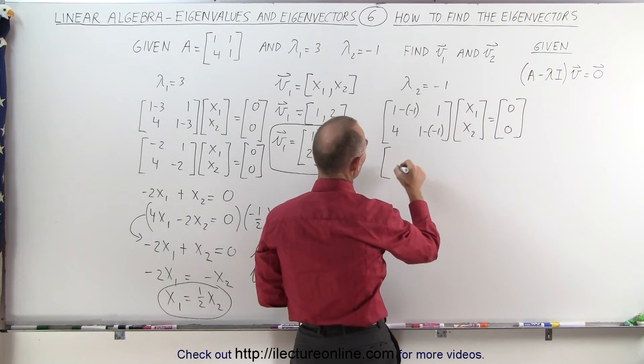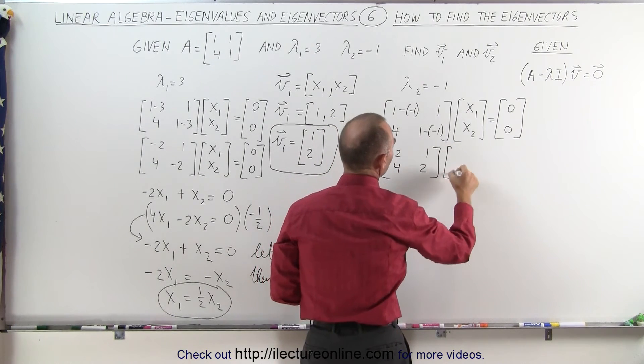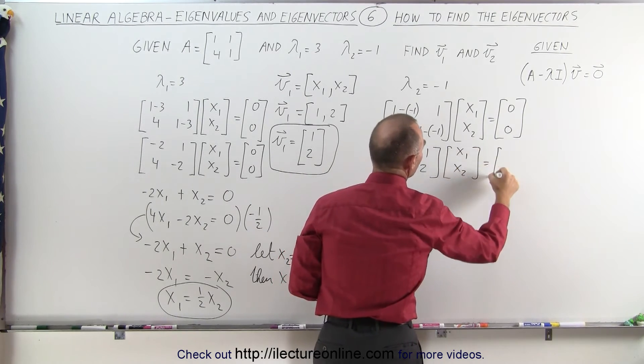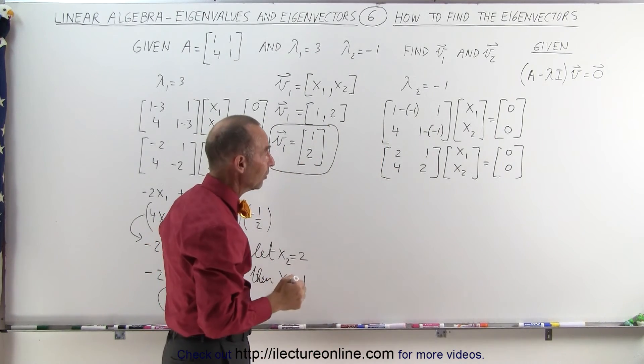Simplifying this, this will be 2, 1, 4, and 2, multiply times the second eigenvector, and that equals 0. So now we're in the quest of finding what that second eigenvector is.